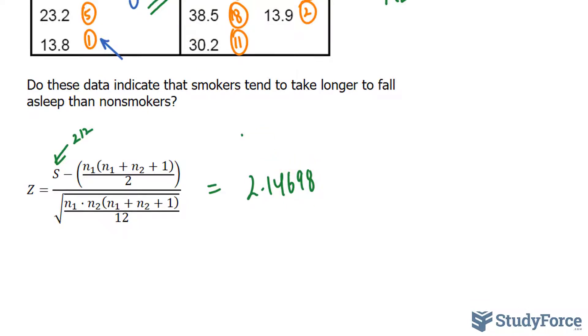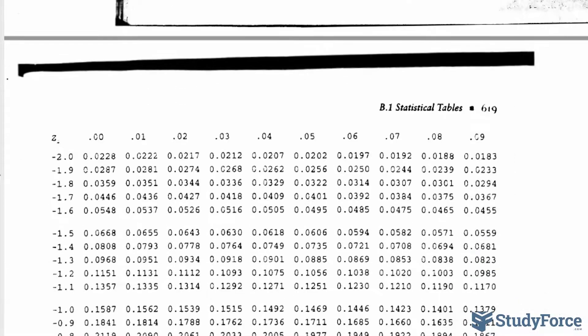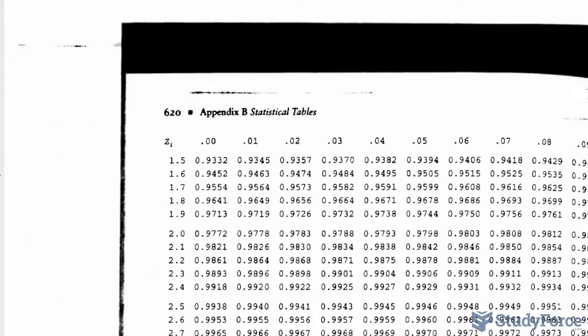That will be our Z score which we will locate in the Z table for the probability that Z is greater than 2.14698. So we need to find the probability of Z being greater than that. And our table actually shows values where Z is less than the number. So what we will do is take 1 minus P Z being less than 2.14698.